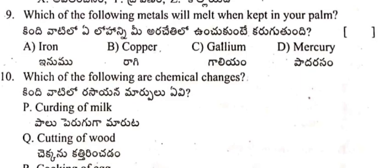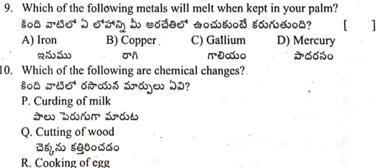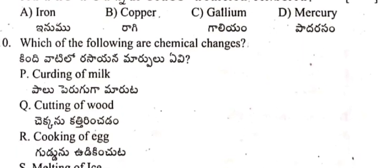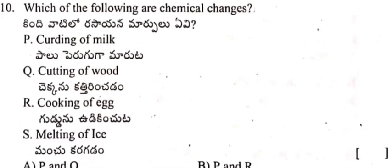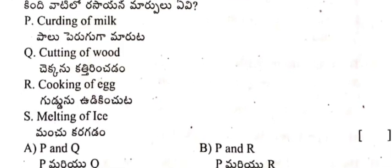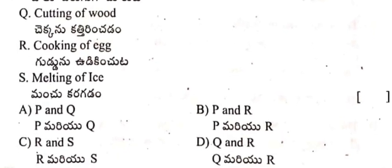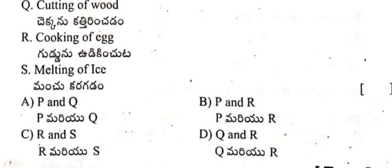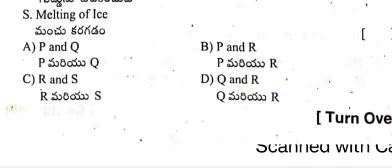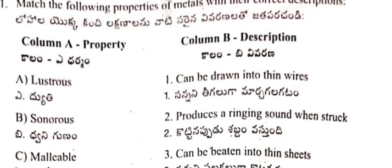Question 9: Which of the following metals will melt when kept in your palm — iron, copper, gallium, or mercury? Question 10: Which of the following are chemical changes? P: souring of milk, C: cutting of wood, cooking of egg, S: melting of ice.